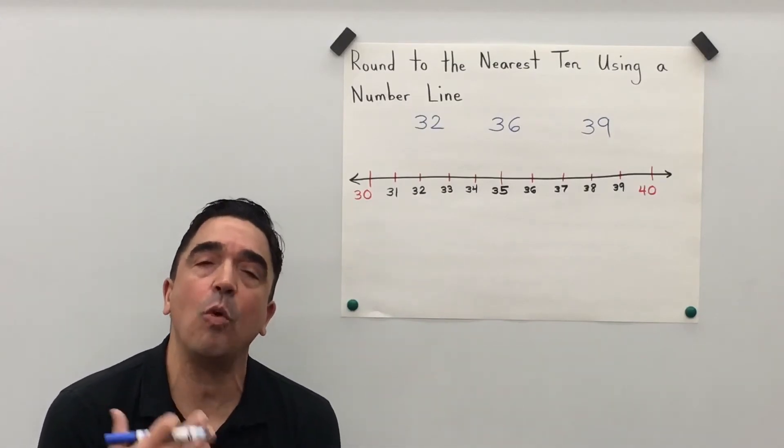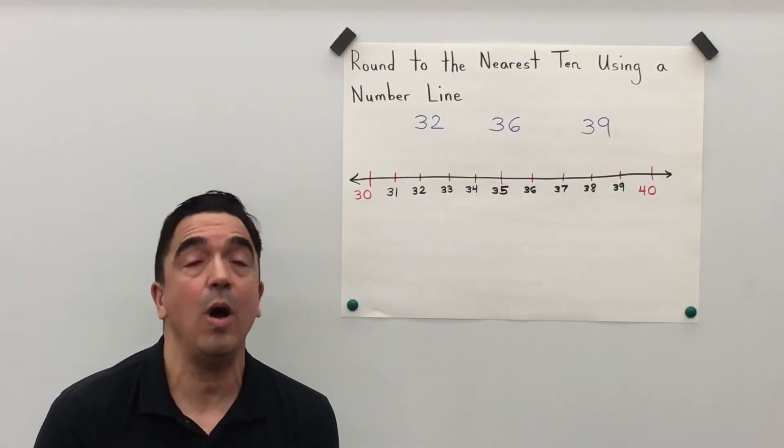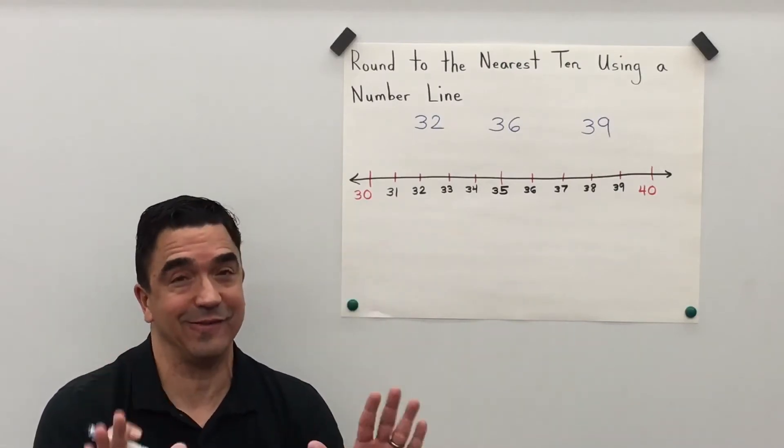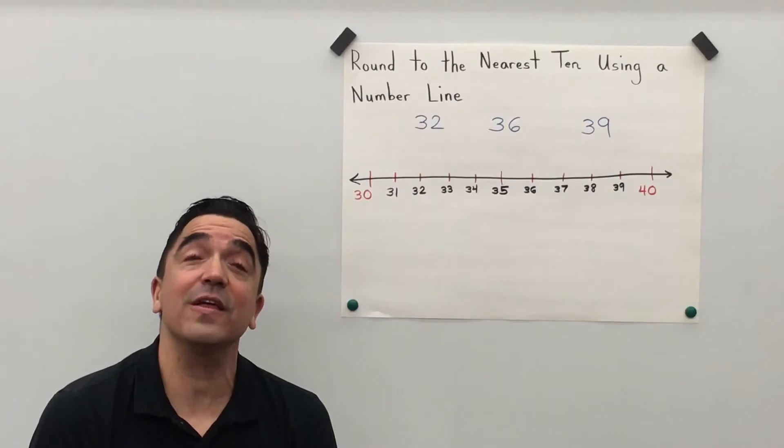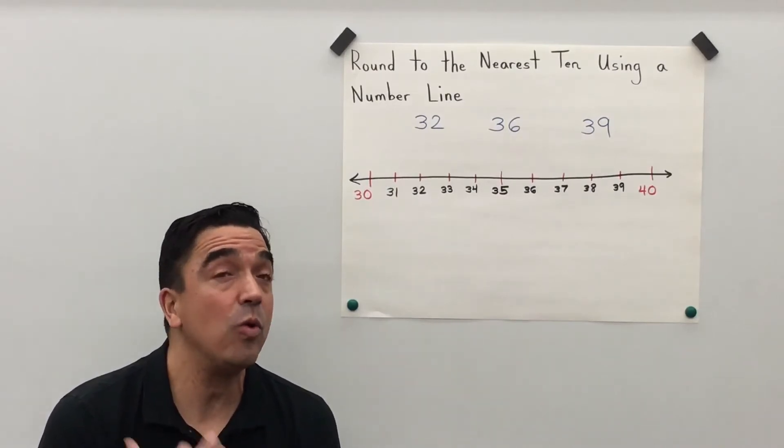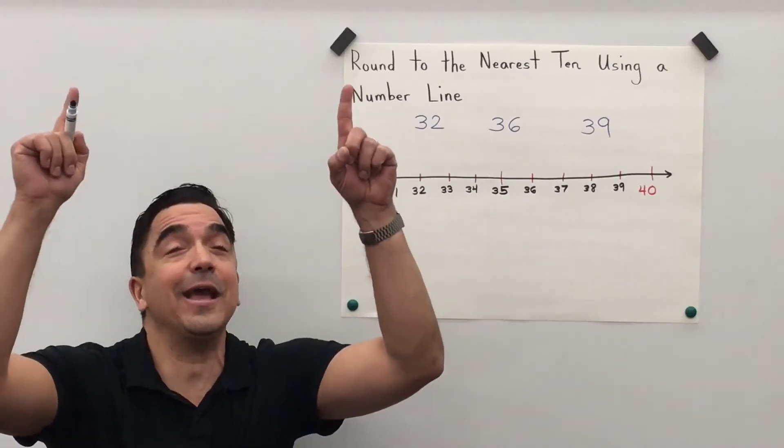If the number in the ones place is a 0, 1, 2, 3, or 4, it stays the same. If the number is a 5, 6, 7, 8, or 9, it goes up.